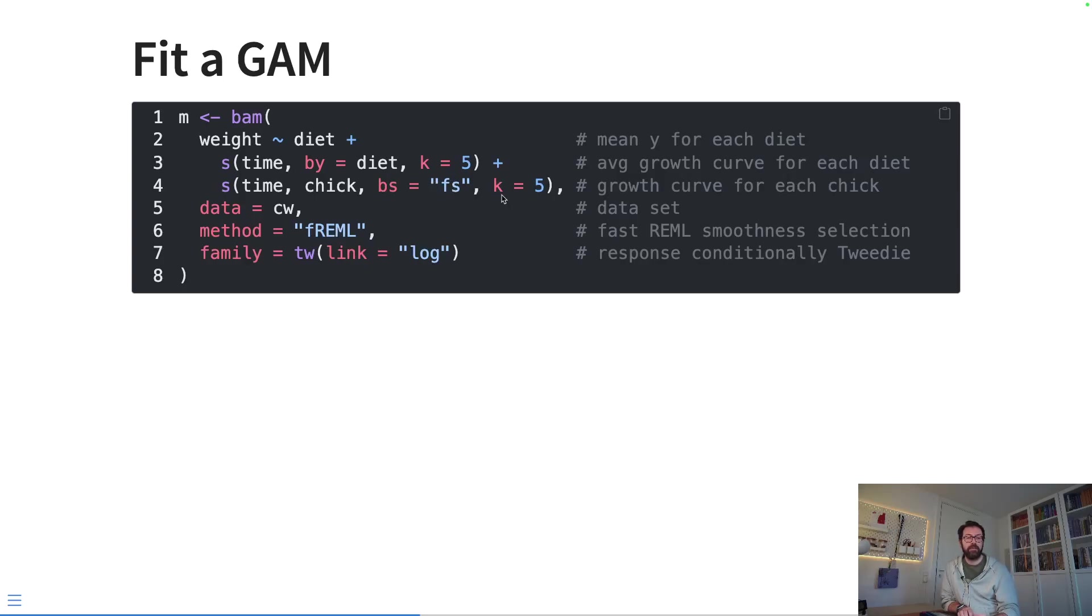Then in the next line of the formula, we are going to be modeling each of the chicks' growth curves themselves using this random factor smooth basis. Again, we're keeping these relatively simple and we're just going to use five basis functions for each of the chicks. We tell it where the data come from.